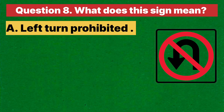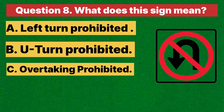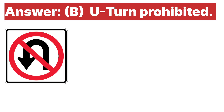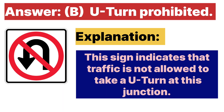Question eight: What does this sign mean? A. Left turn prohibited. B. U-turn prohibited. C. Overtaking prohibited. D. None of the above. Answer is B, u-turn prohibited. Explanation: this sign indicates that traffic is not allowed to take a U-turn at this junction.